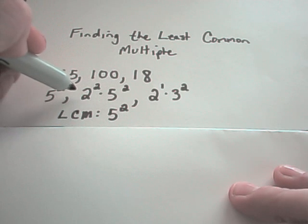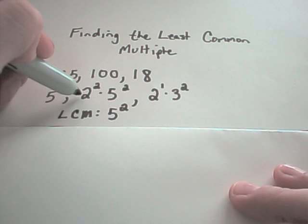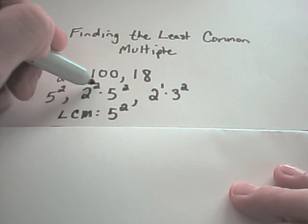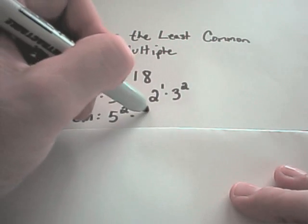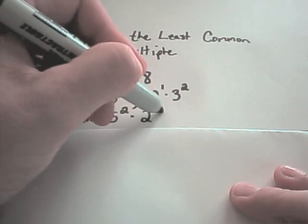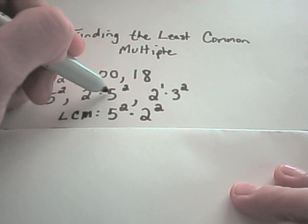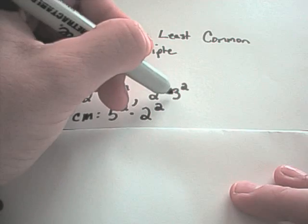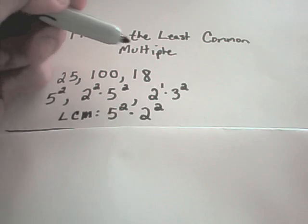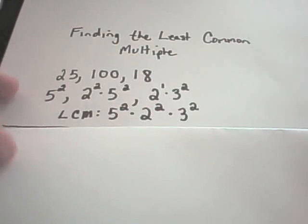Then I simply just keep moving left to right. The next number that I come across as a base, we'll call 5 the base here, is a 2. Here I see a 2 to the second power and I see a 2 to the first power. Again I take the larger of those two numbers, which is going to be 2 to the second power. Keep moving left to right. I've already accounted for the 5, I've already accounted for the 2. And then I'll do the same thing. I'll look at the 3. Well there's no other 3's in there. So 3 to the second is the largest power.